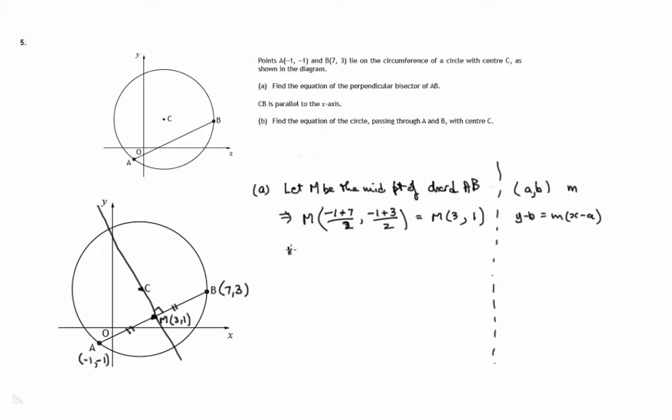So first of all, let's work out the gradient of the chord AB. Y-difference over x-difference. So 3 minus minus 1 over 7 minus minus 1. Y-difference over x-difference. So that's the same as 3 plus 1 over 7 plus 1. That's a half. And fair enough, it looks like that. When you go one along, you've gone a half up. So that gradient looks OK.